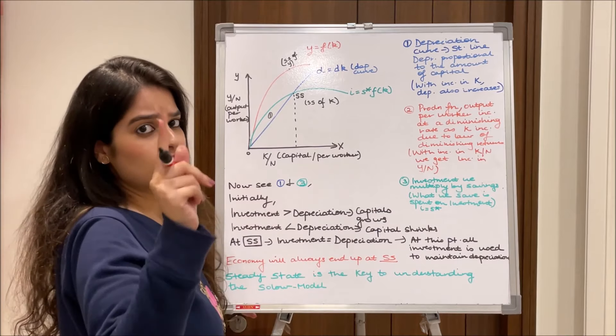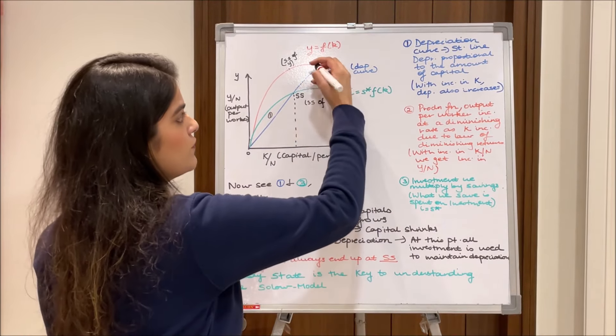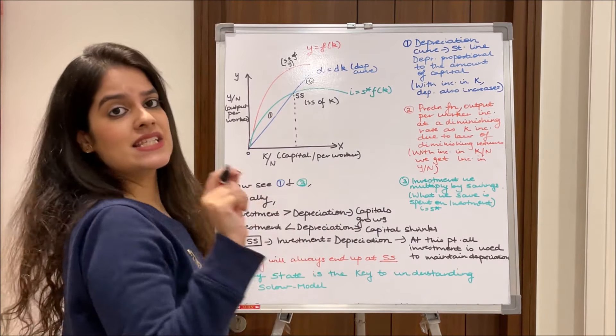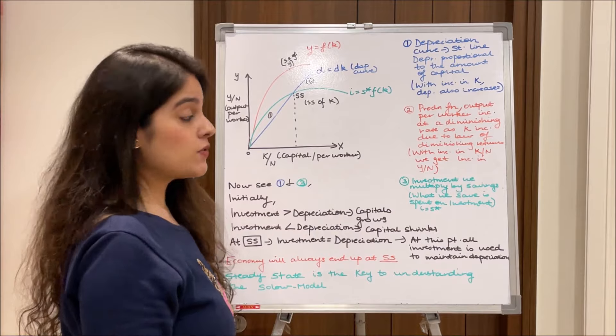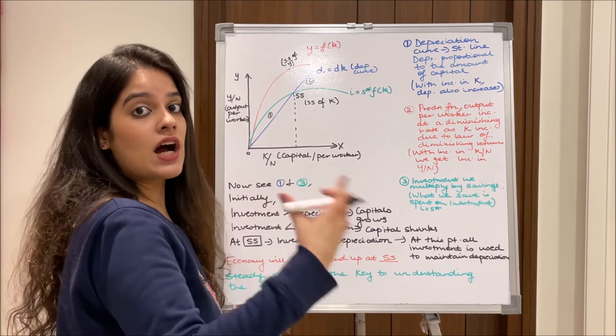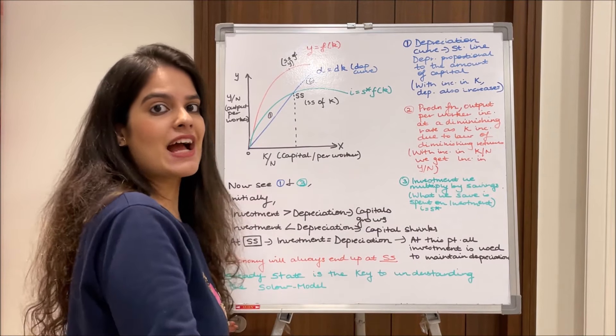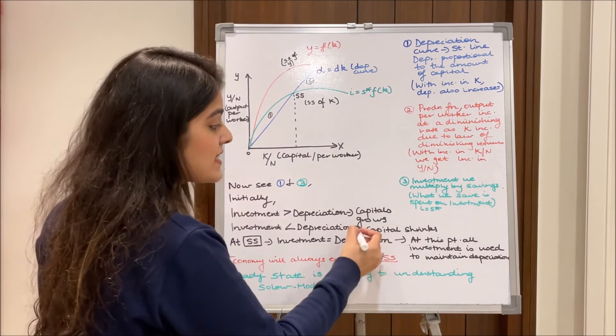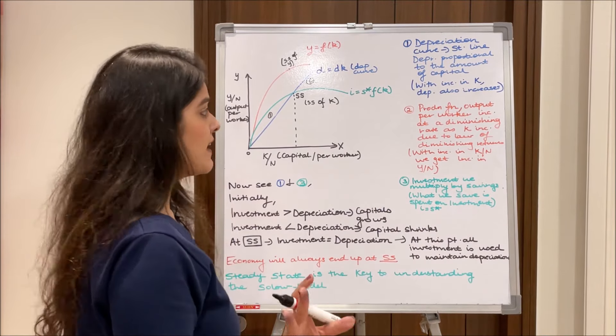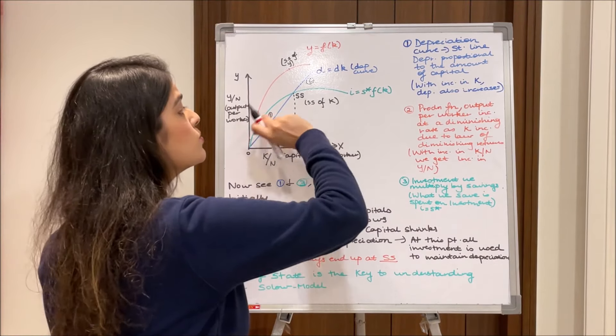Isn't it obvious? Think logically, it's very simple. In the next phase, if we take number two, when the blue line is above the green line at this point, the depreciation is greater than the investment. That is, our capital, the wear and tear, is more than the actual investment and hence our capital shrinks at this point. Have you understood this?